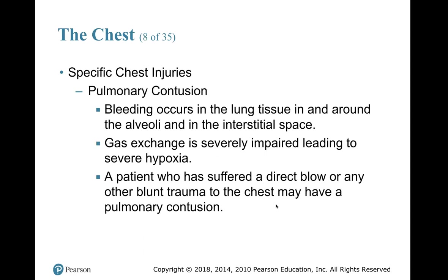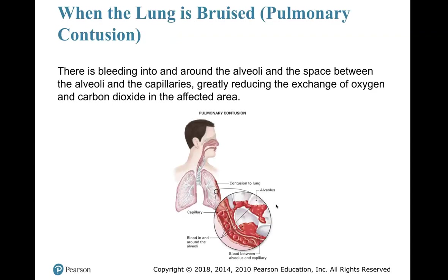Pulmonary contusion: contusions are bruising. Bleeding occurs in the lung tissue, in and around the alveoli, and in the interstitial space. Gas exchange is severely impaired, leading to severe hypoxia. Think about what gas exchange means from anatomy and physiology — oxygen is picked up into the bloodstream from the alveoli, and carbon dioxide is dumped into the alveoli for exhalation. A patient who has suffered a direct blow or other blunt trauma to the chest may have a pulmonary contusion.